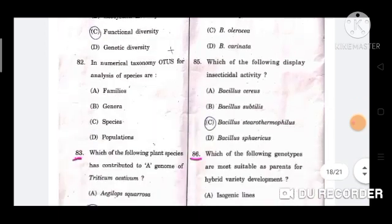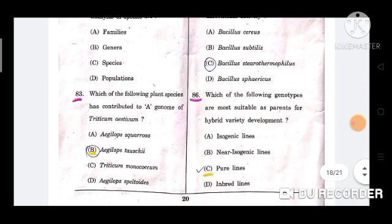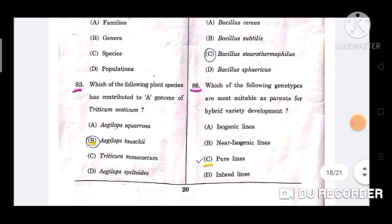Question number 83: Which of the following plant species has contributed to a genome of Triticum aestivum? The option is B, Aegilops tauschii.